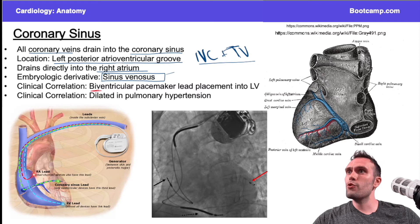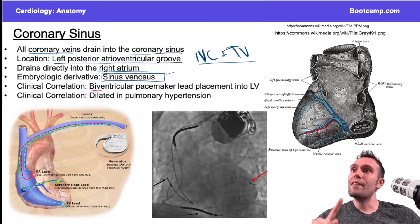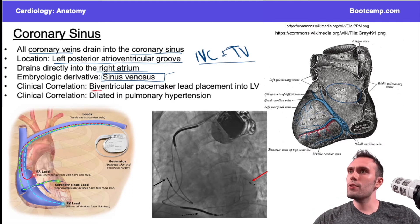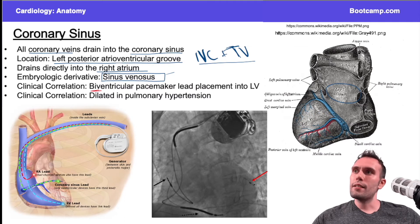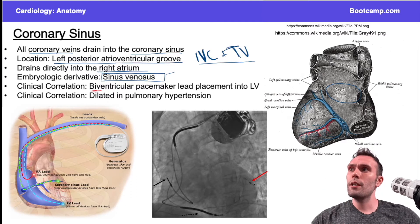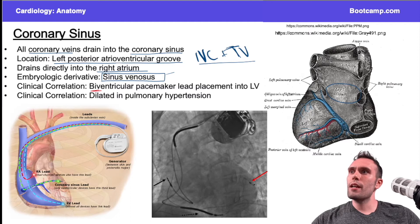All coronary veins drain into the coronary sinus, depicted here running along the left posterior atrioventricular groove between the left atrium and the left ventricle, right down the middle of these two vessels. This is very high yield — the term 'left posterior atrioventricular groove' comes up relatively frequently.